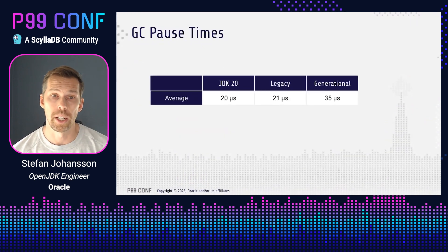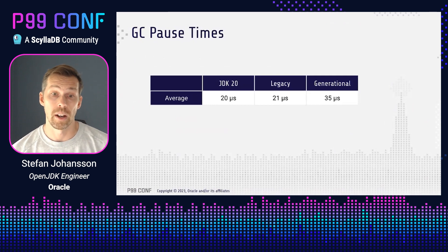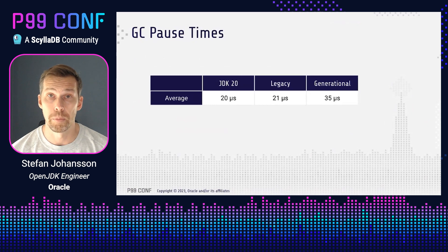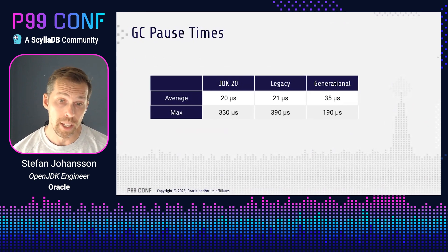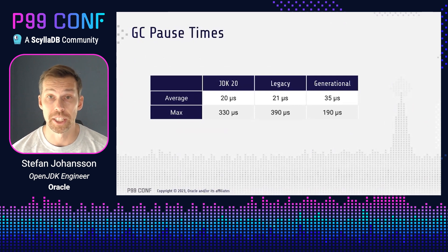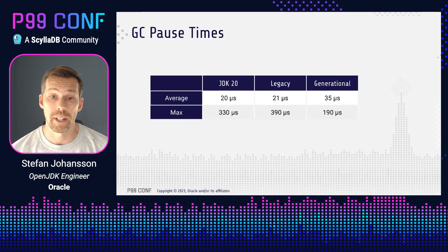A lot of the time when you look at application latencies in GC you're thinking about GC pause times, so let's start by looking at the GC pause times across these three different setups. If we look at the average, they are very low for all the different GCs. Single-generational in JDK 20 and 21 are on average around 20 microseconds — extremely good. With generational we see a bit higher average, basically because one of the pauses in generational has more work for the generational write barrier. If we instead look at the max pause times, the generational version is best, limiting that one pause a bit better than the single-generational case. But single-generational still comes in well below the one millisecond goal.